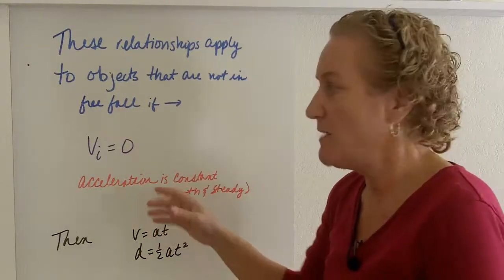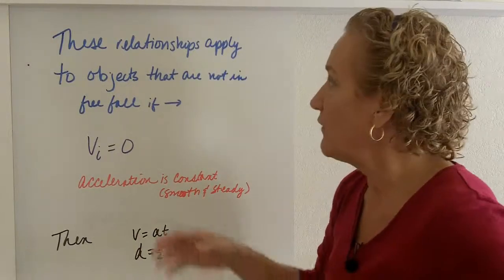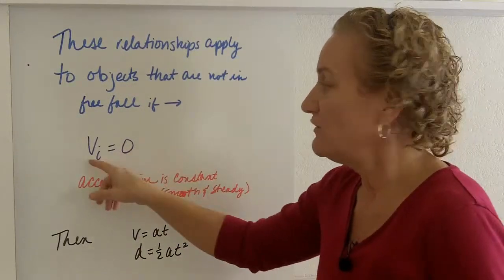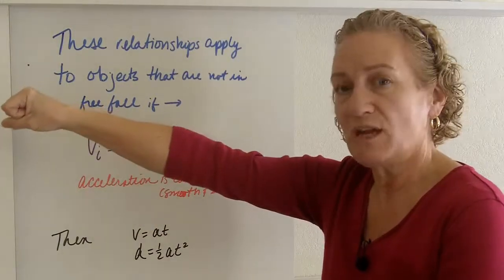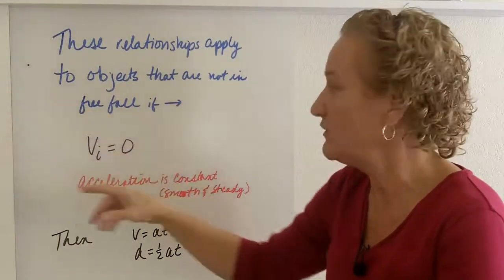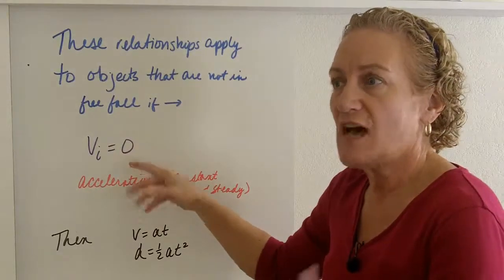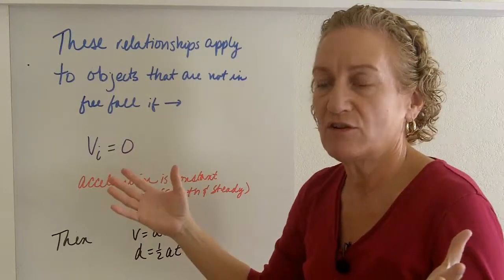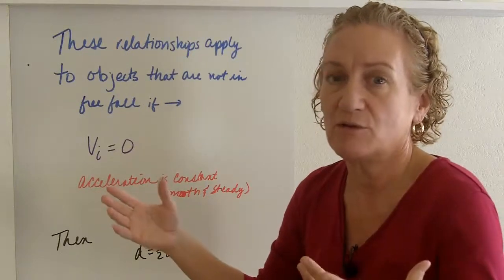There's two conditions that have to be met for those two equations to be true for objects other than free fall. The first thing is initial velocity, VI, V initial, V at the very beginning is zero. So when I drop that Barbie, I'm just dropping her. I'm not throwing her, I'm just letting her go. She has no initial velocity. I didn't use units here because initial velocity, if it's zero, it's zero. It doesn't matter if it's miles per hour, feet per second or meters per second. Zero is zero.